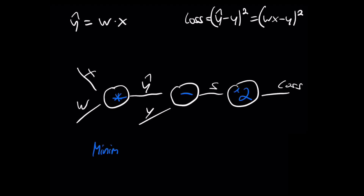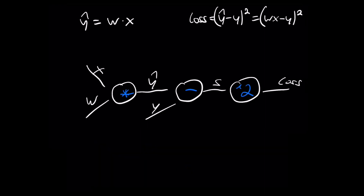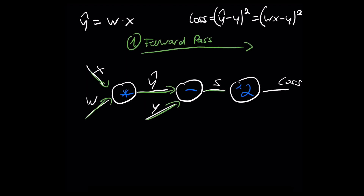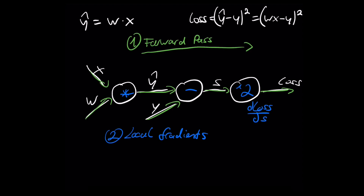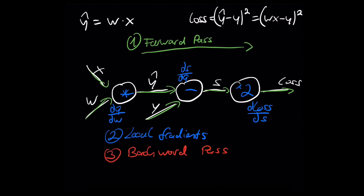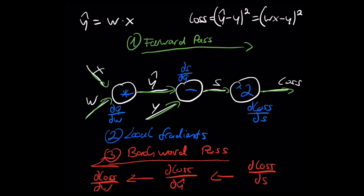The task is to minimize the loss, for example with the gradient descent method. So we have to calculate the gradient of the loss with respect to the weights, and we just learned we have to apply three steps. First we do the forward pass and calculate the loss. Then at each node we calculate the local gradients starting at the end: d_loss/d_s, then d_s/d_y_hat, and d_y_hat/d_w. Then we do the backward pass and calculate d_loss/d_y_hat and finally d_loss/d_w, which is what we need, obtained by applying the chain rule.